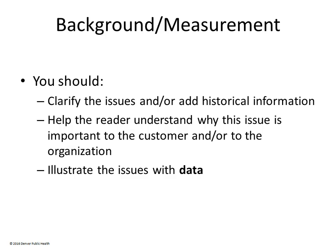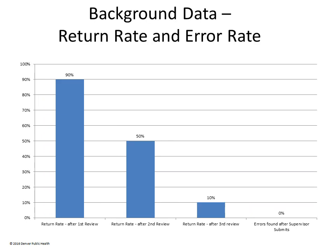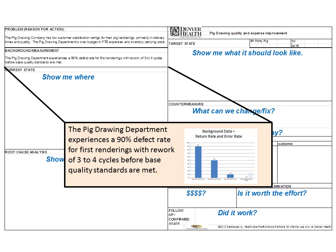Next, the Pig Drawing Company needs to provide background information about the problem, which can include data, a timeline, or whatever is most important to tell the story. They looked at two pieces of data. First, the average time it takes each employee to draw a pig, using two minutes as the goal — the national pig drawing benchmark. All employees are drawing pigs efficiently, so this doesn't appear to be part of the problem. Second, they looked at the pig drawing return rate: 90% of drawings are returned to employees after the first review to be fixed, and it takes all employees three to four rounds to draw a correct pig.